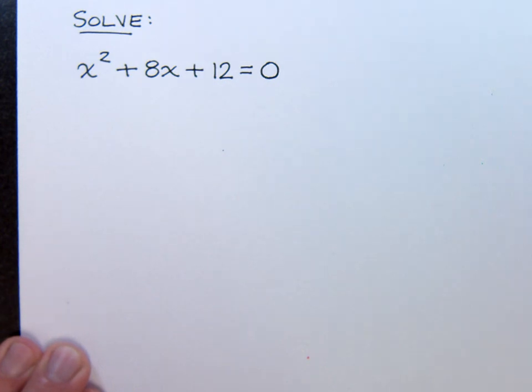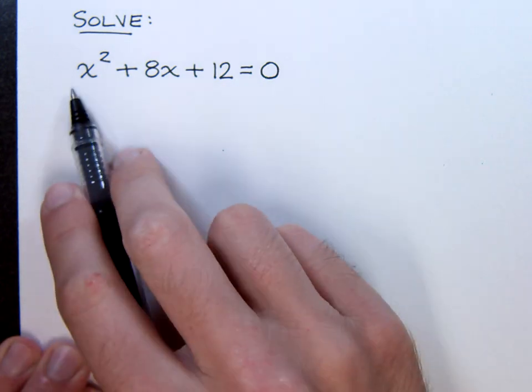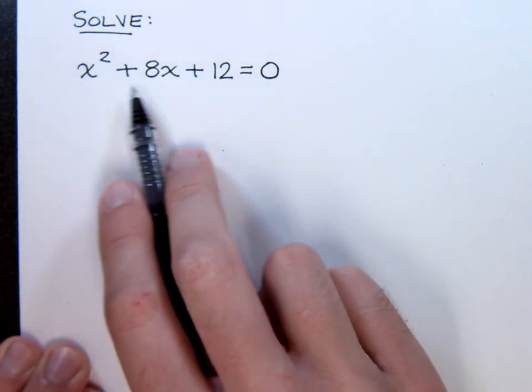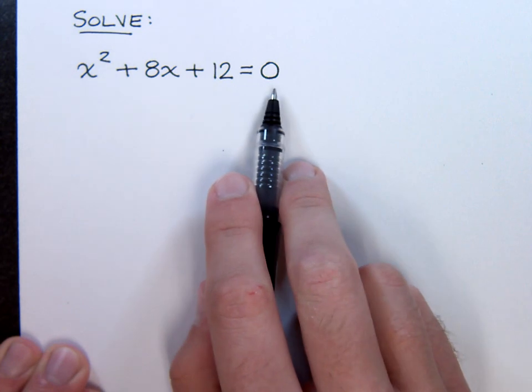Now we want to look at solving quadratic equations by factoring. This first quadratic equation is set up very nicely for us. Everything is already on one side and zero is on the other side.